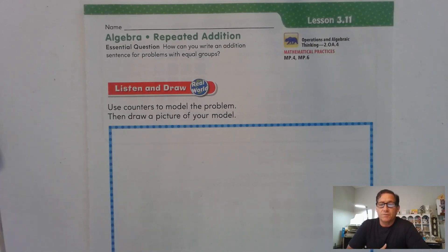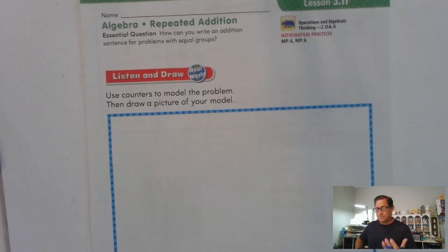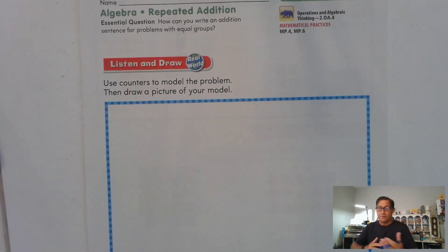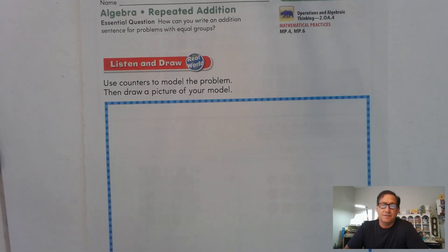We're going to use counters to model the problem that I give you, and then you're going to draw a picture of your model. For counters, we can use regular yellow and red counters. In my case, I'm going to use Cheerios. You can use beans, coins, anything that you can set up to represent rows of counters.